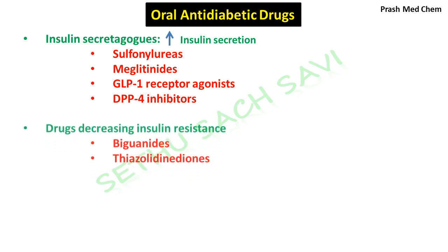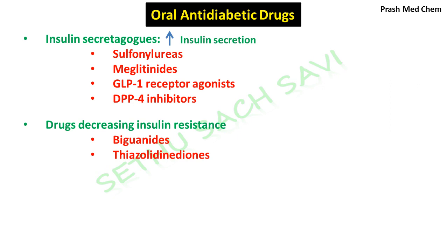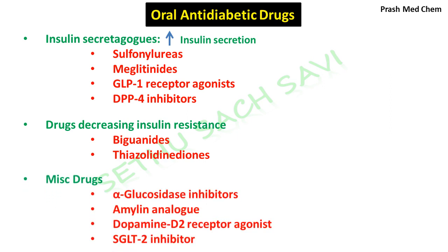The second category includes drugs that decrease resistance to insulin, and the classes under this category include biguanides and thiazolidinediones. The third category — miscellaneous — includes drugs acting by different mechanisms, such as alpha-glucosidase inhibitors, amylin analogues, D2 receptor agonists, and SGLT2 inhibitors.